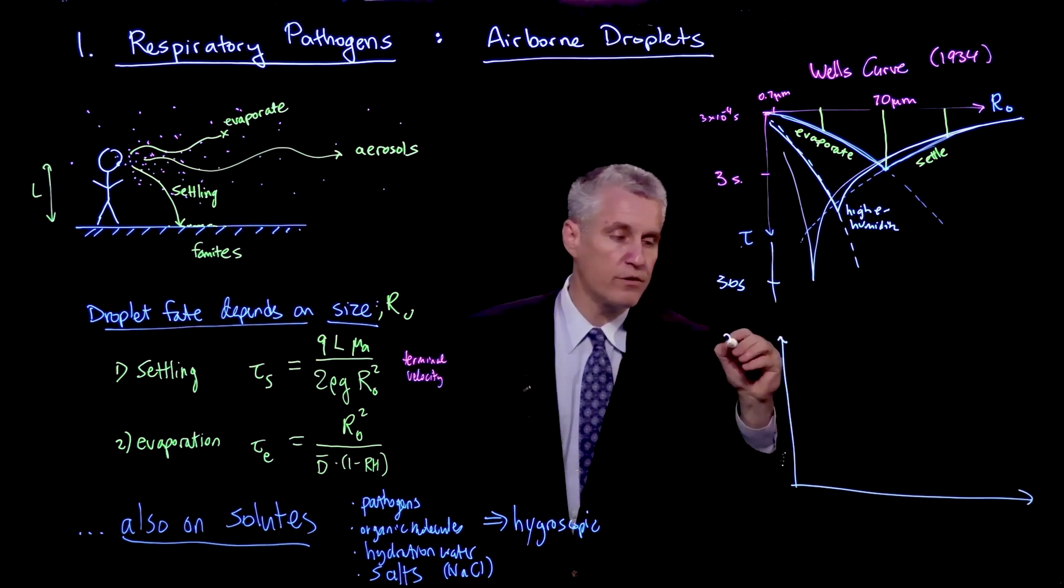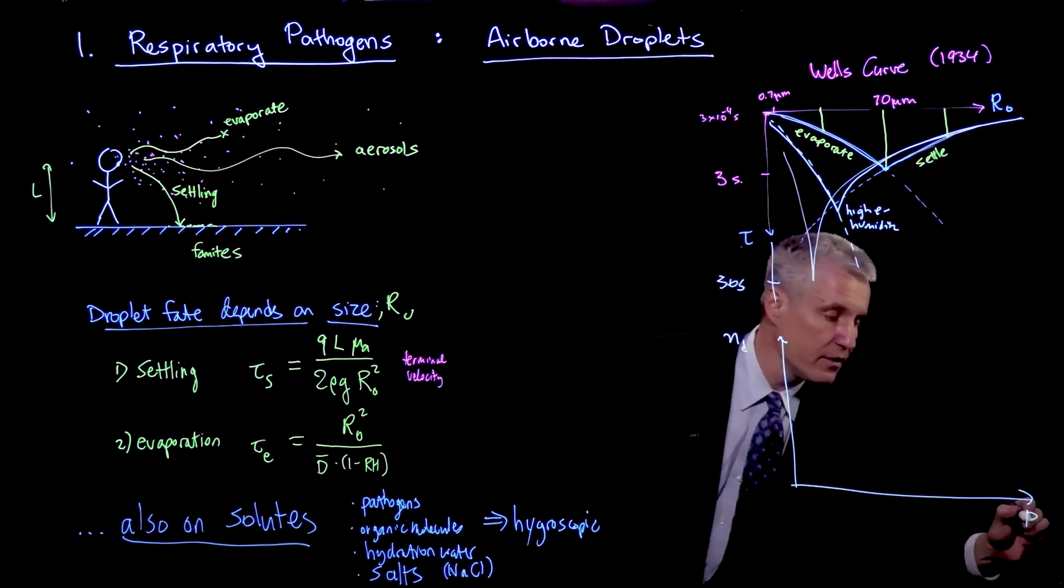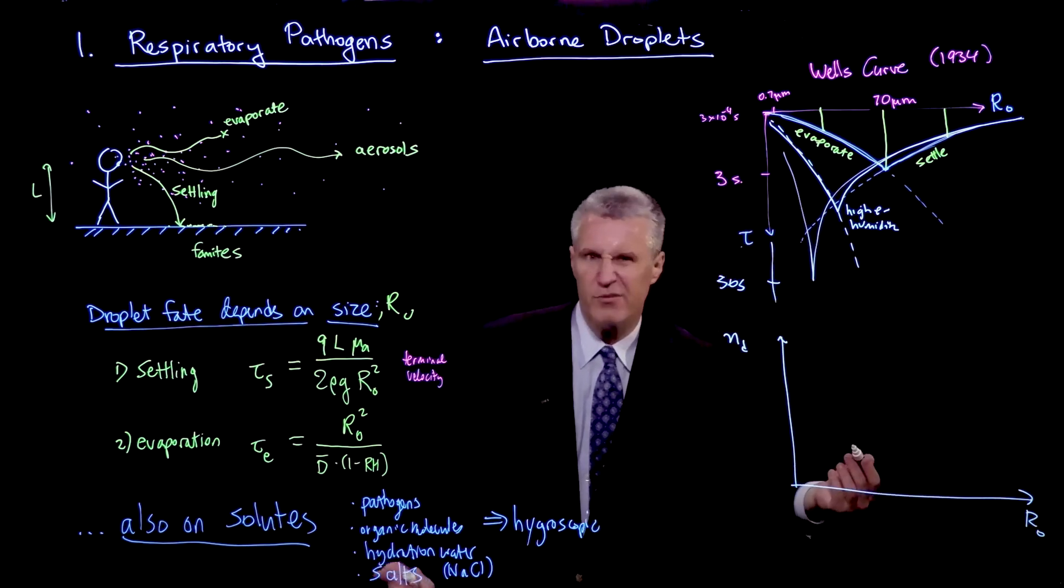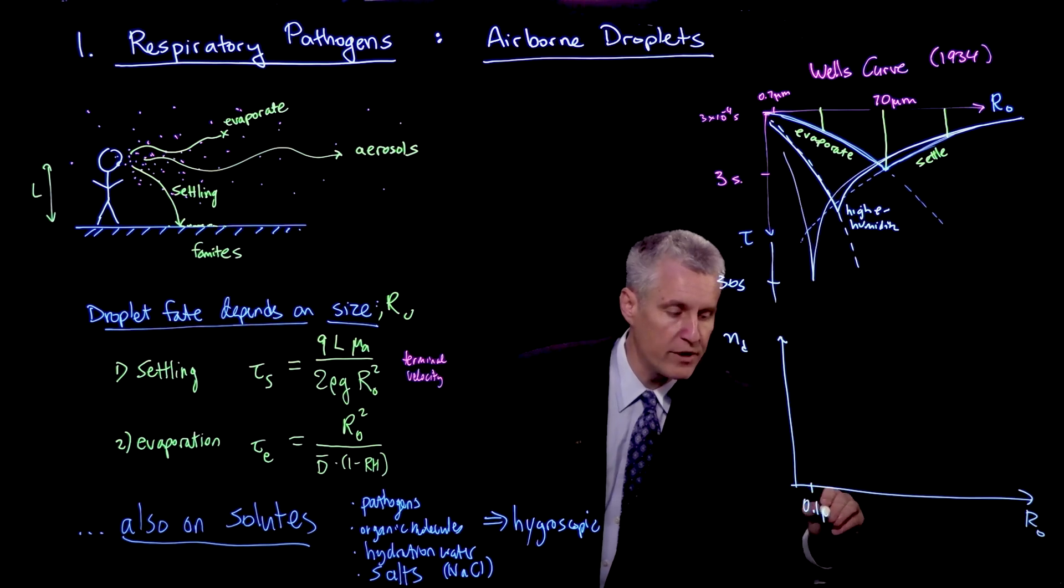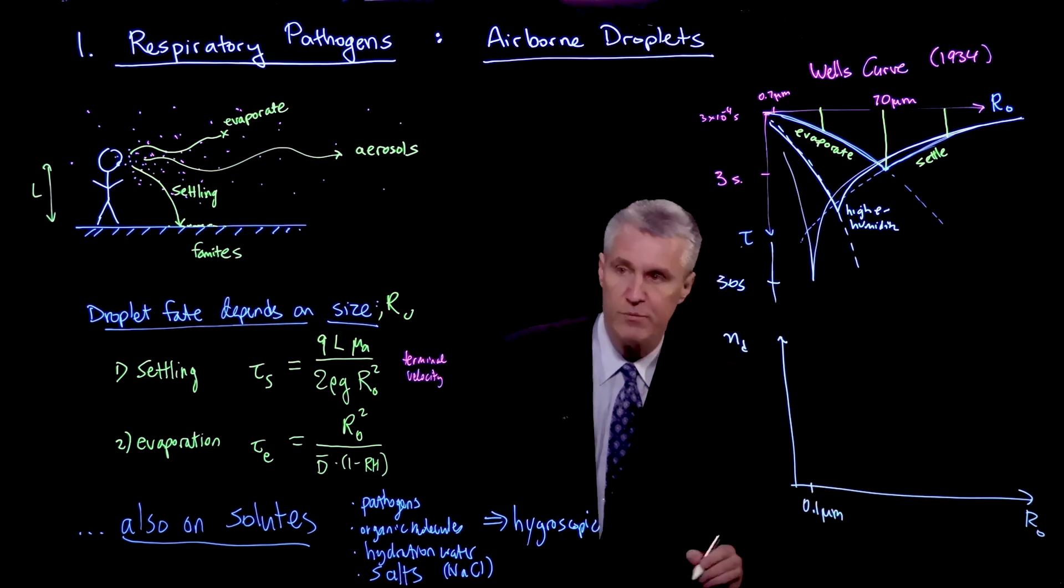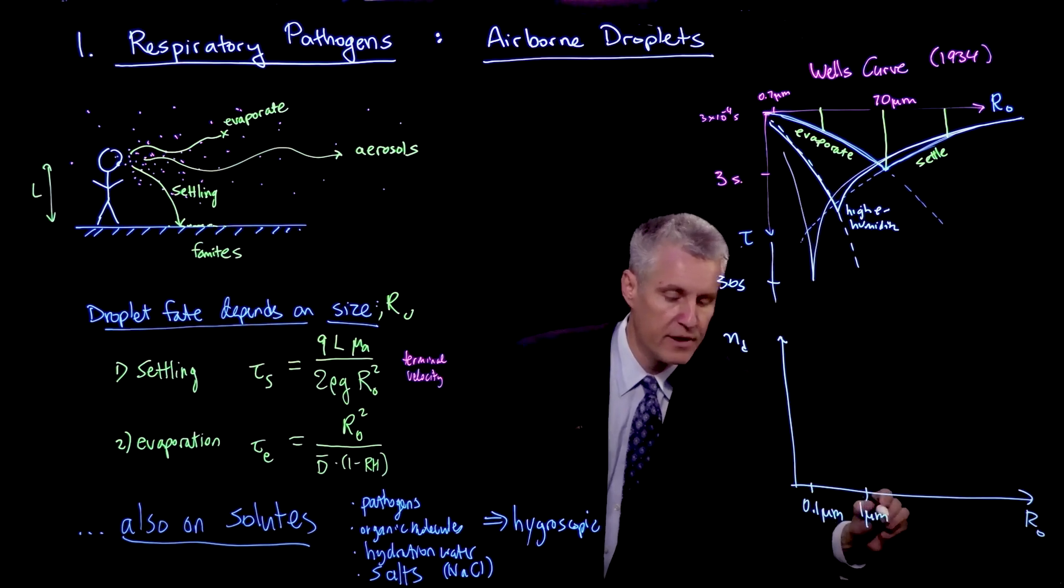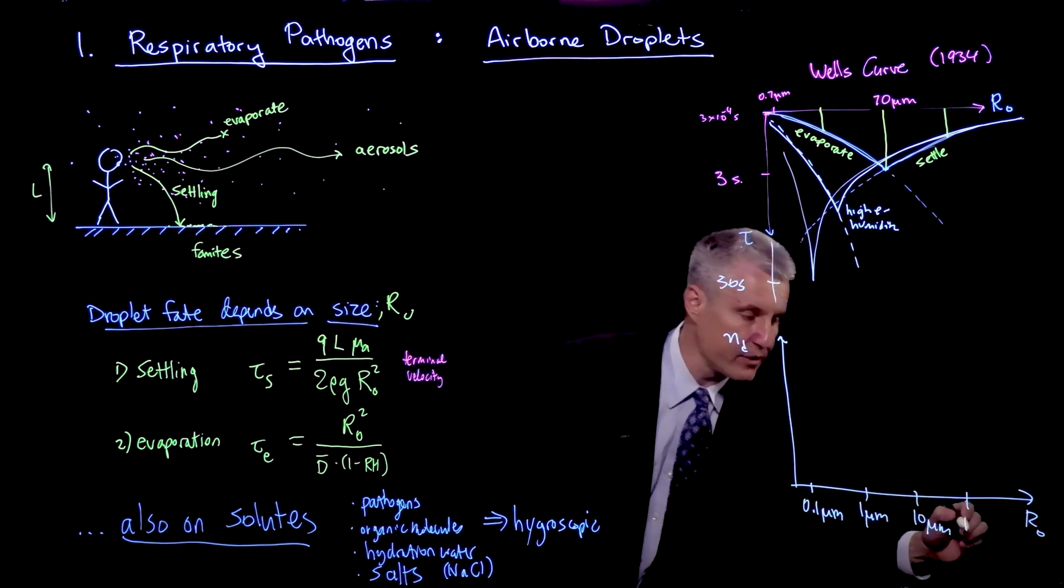And so if we look at the number of droplets that we have at different sizes, and this is for different kinds of respiration, I'll draw this to sketch what it would look like on a log scale. So here I'll put 0.1 microns, which is 100 nanometers, and then I'll put 1 micron, and then 10 microns, and then 100 microns.